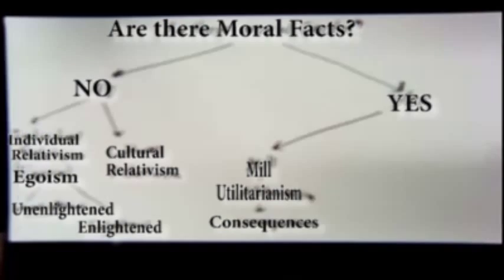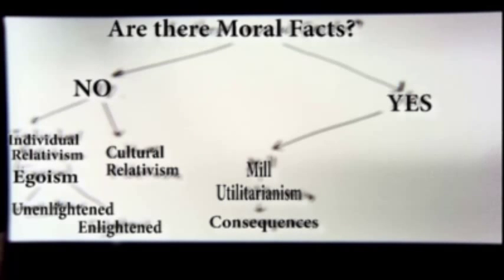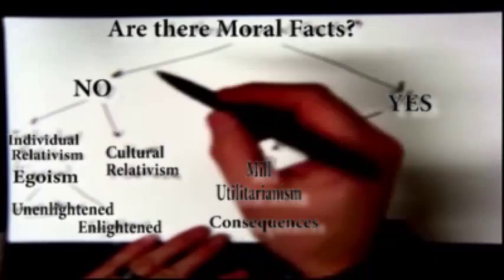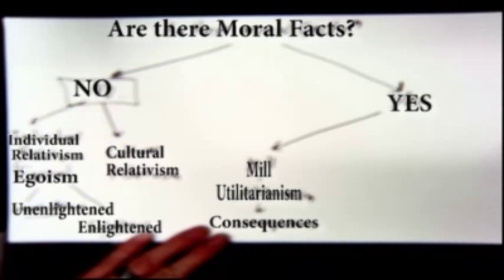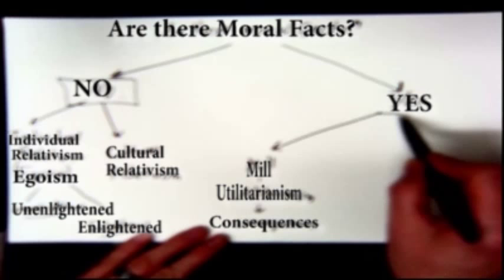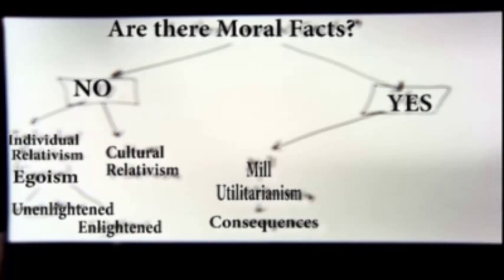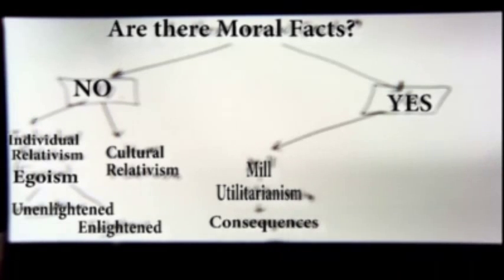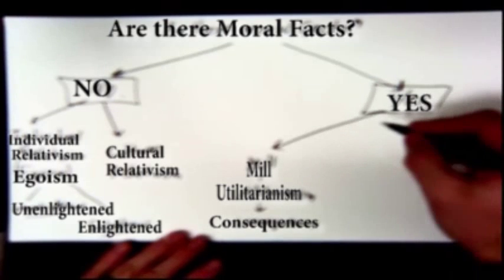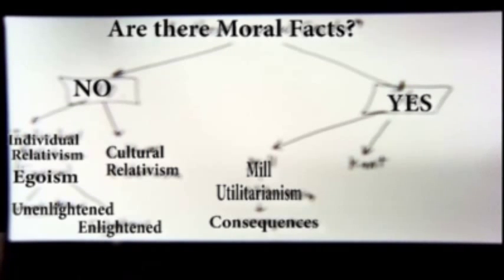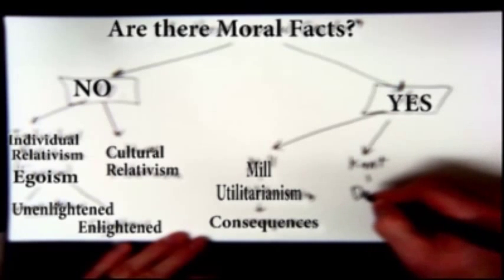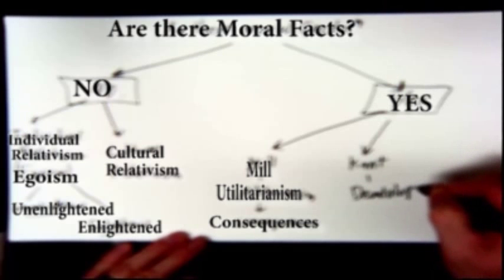Let's put some more theories on the board. We have 'no moral facts' giving us some version of relativism — morality as a function of our choices. And we have 'yes, there are moral facts,' leading to the question of what underlies them. The first answer was consequences. A very different thinker, Immanuel Kant, has what's called deontology. The basic idea behind deontology is that instead of looking at consequences, there are intrinsic moral principles that are universal — not tied to any individual, but something that applies to everyone.